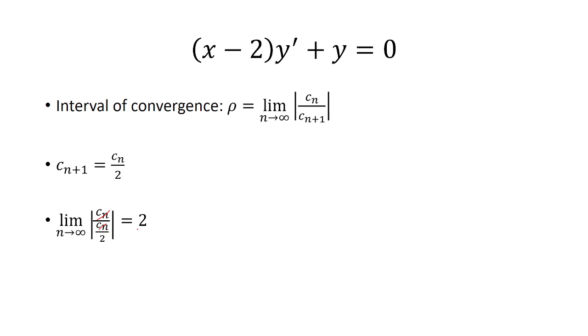I have 1 over 1 over 2, which is just equal to 2. And so the series converges if the absolute value of x is less than 2, and so the radius of convergence is equal to 2.